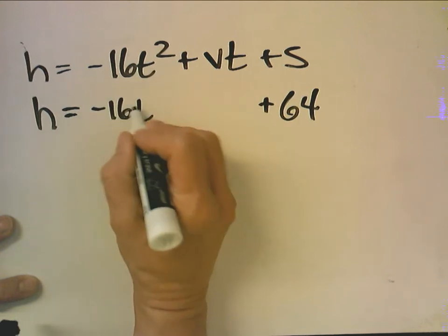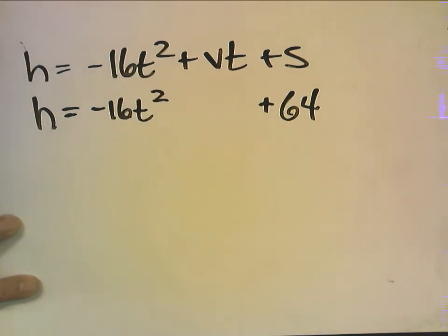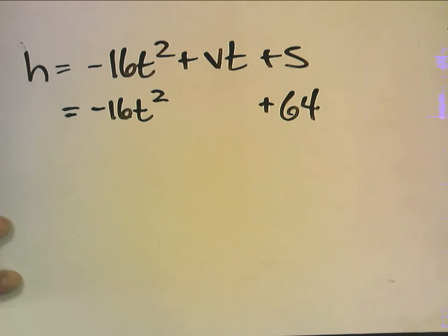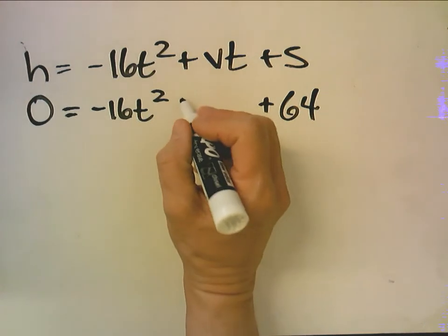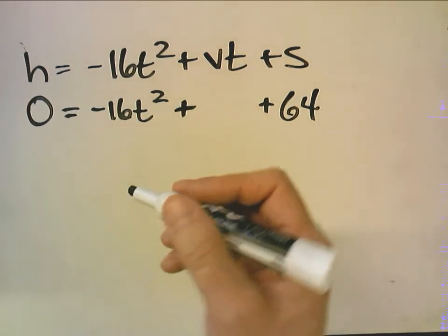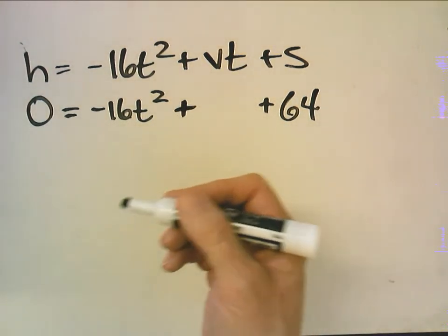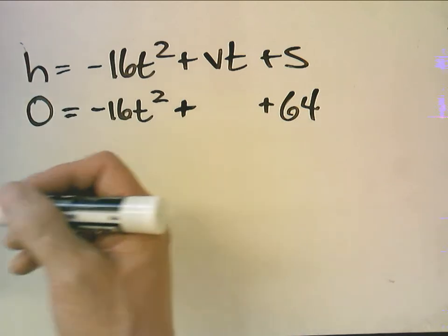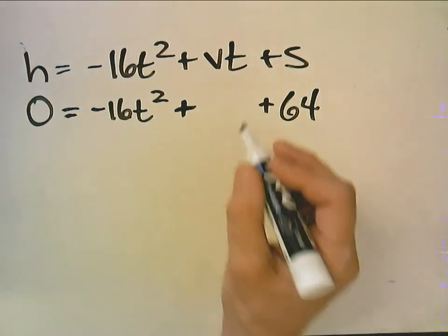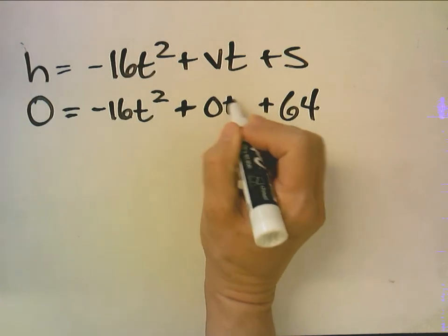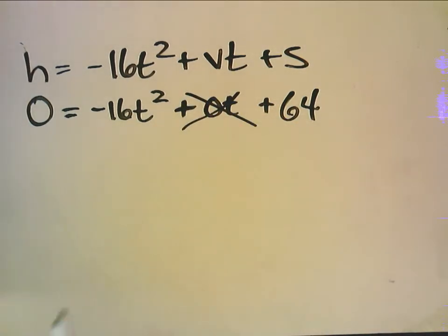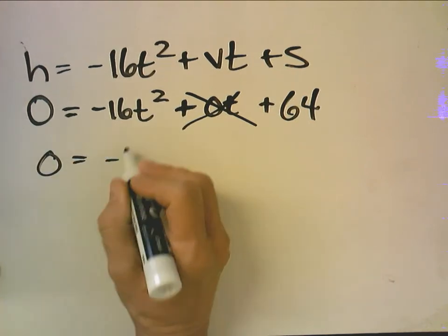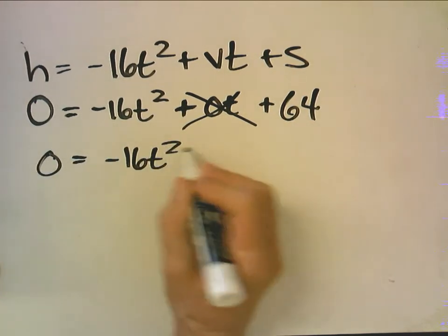And I need to solve for t and I want to know what t would be when the sponge hits the ground. Well if it hits the ground then h is zero. What's interesting here is if you drop something, are you applying any vertical velocity or is it just gravity? And the answer is it's just gravity. So it would be zero t which means you don't even have a term there. So when you drop something v equals zero.